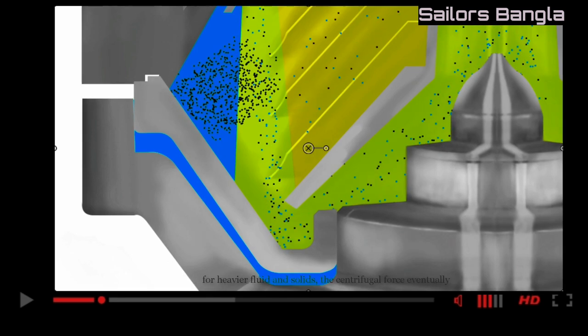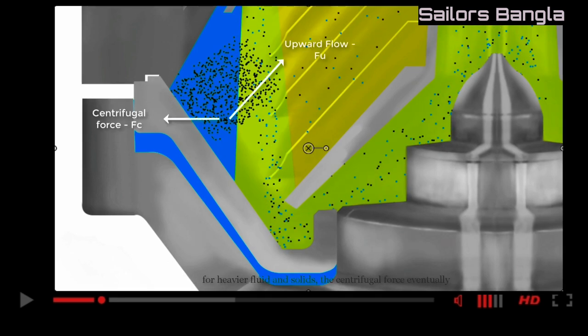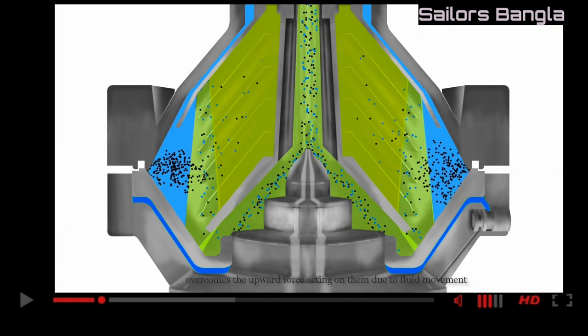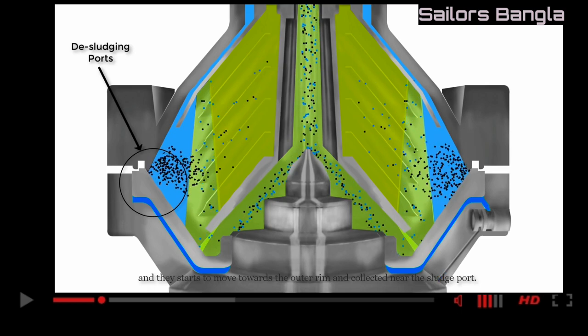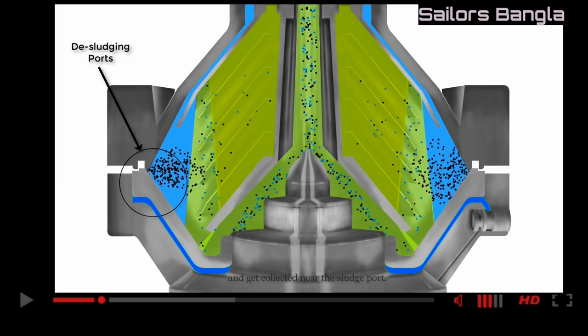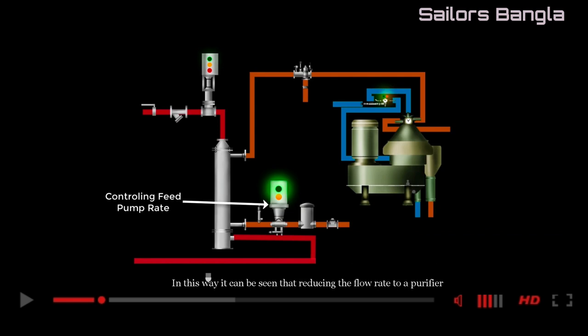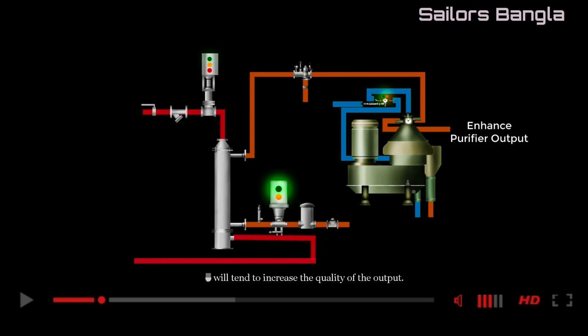For heavier fluids and solids, the centrifugal force eventually overcomes the upward force acting on the particles due to fluid movement, and they start to move towards the outer rim and get collected near the sludge port. In this way, it can be seen that reducing the flow rate to a purifier will tend to increase the quality of the output.